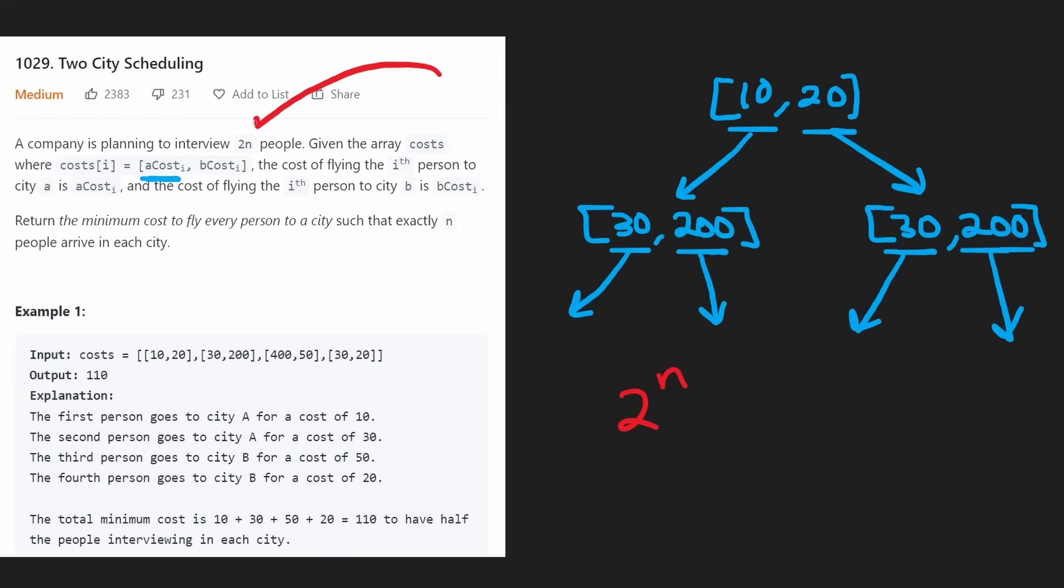You can see that we're going to keep branching two times. The size of the tree is going to be 2 to the power of n, where n is the size of the input. But in the context of this problem, the size of the input is actually 2n. This is not very efficient.